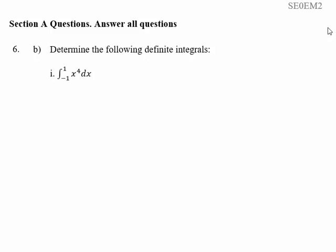To integrate x to the fourth, we increase the power by one so that becomes x to the five, and then we divide by the new power. So x to the four becomes x to the five over five.